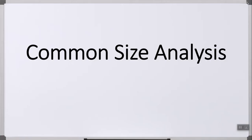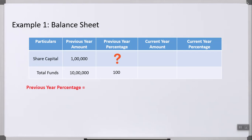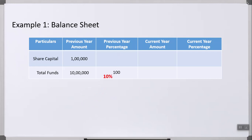Let me explain with the help of an example. We are taking a balance sheet example with 2 years instead of 2 companies. In the first year, share capital is 1 lakh. I will compare share capital in relation to total funds. Total funds of the previous year is 10 lakh, which we assume to be 100%. The formula for previous year percentage is: previous year amount multiplied by 100, divided by previous year total funds. So it's 1 lakh × 100 ÷ 10 lakh = 10%. Share capital is 10% of total funds in the previous year.